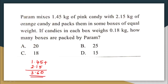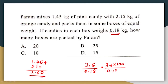He packs 3.60 kg into boxes each weighing 0.18 kg. To find the number of boxes, calculate 3.6 divided by 0.18. Multiply numerator and denominator by 100 to remove decimals: 360 divided by 18 equals 20. So 20 boxes are required. The correct answer is option A, 20.